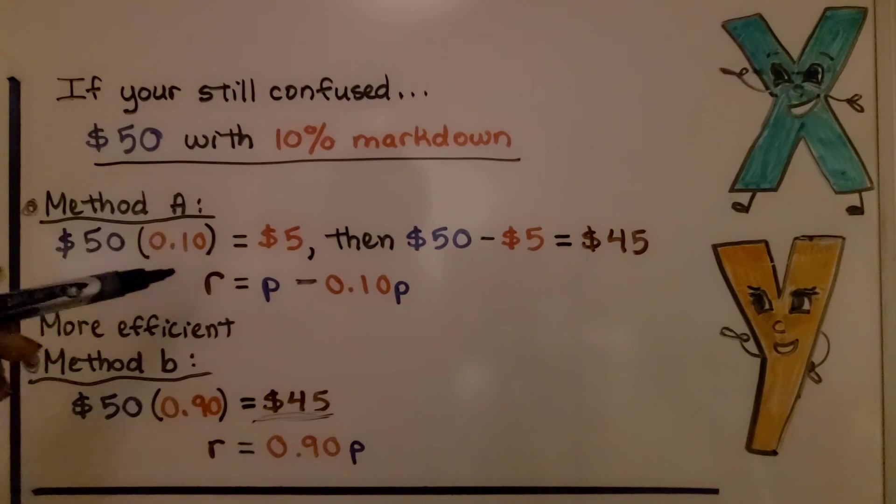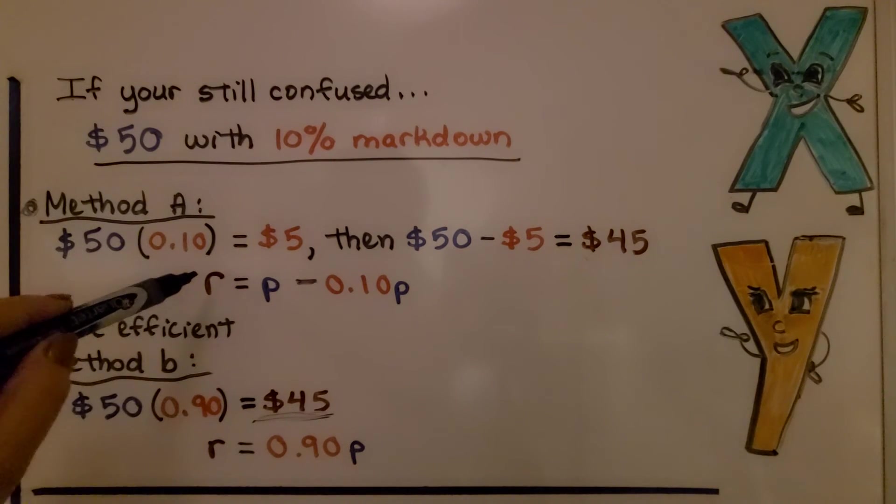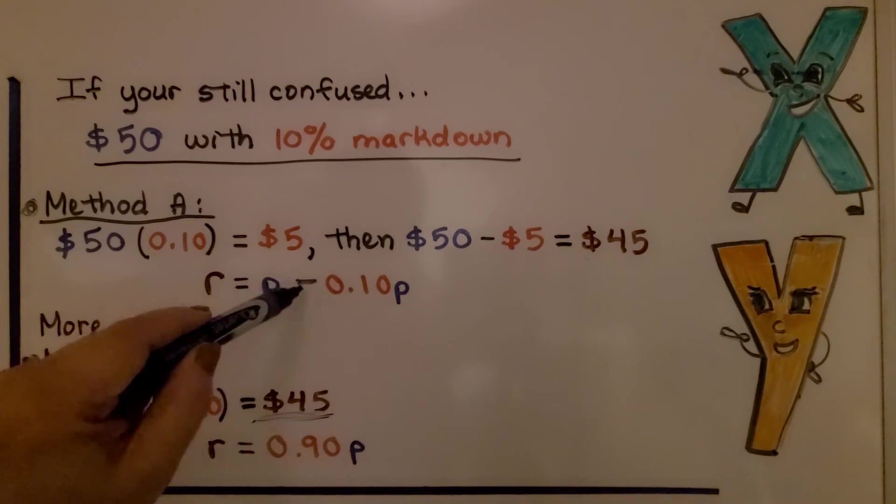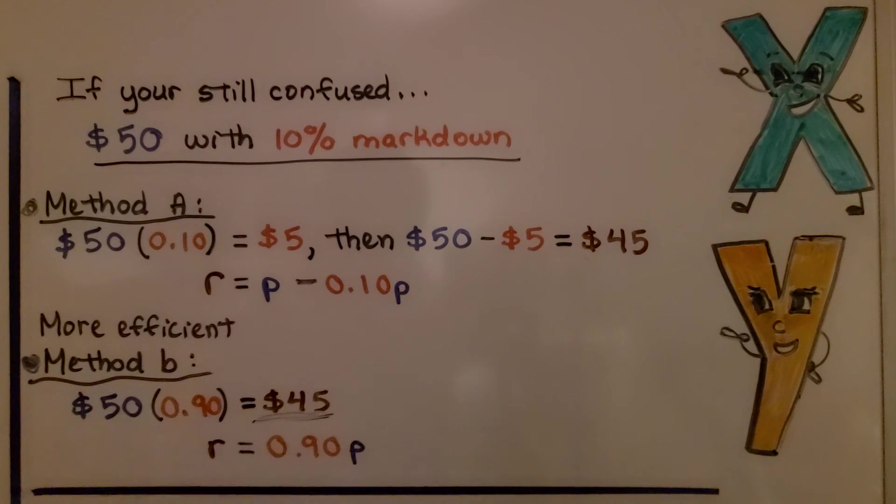So method A's expression would be the retail price is equal to P, that $50 minus whatever 10% of P is. For method B, we just say the retail sale price is 90% of whatever the price is.